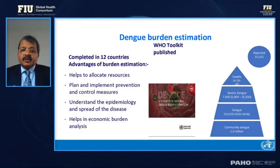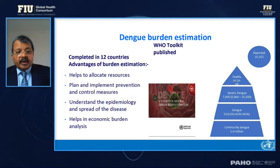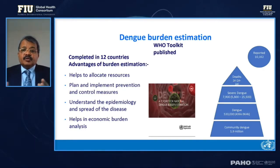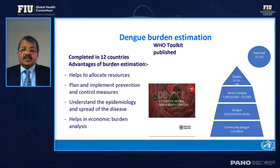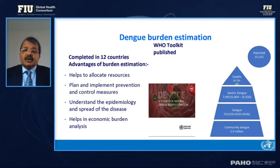WHO has a toolkit on burden estimation and many countries, including some states in India, are beginning to use it more regularly. Overall, burden estimation helps allocate resources, plan and implement prevention and control measures, understand the epidemiology and spread of the disease, and quantify the economic burden. One factor where dengue is not benefiting is DALYs, because DALYs do not truly represent the real dengue burden and the suffering people go through.